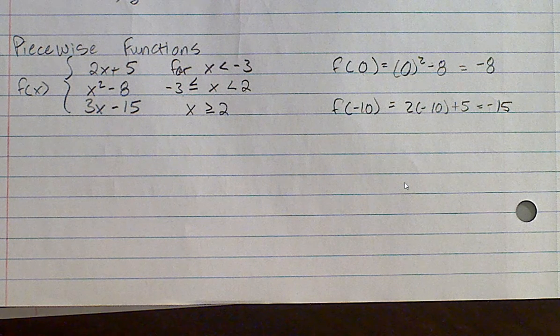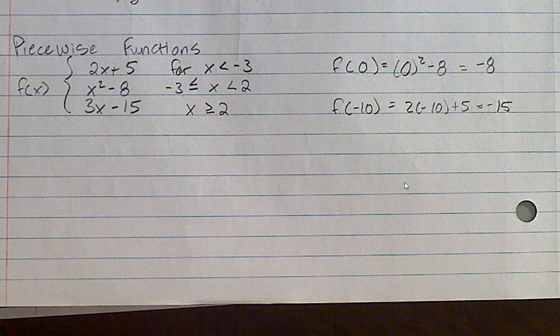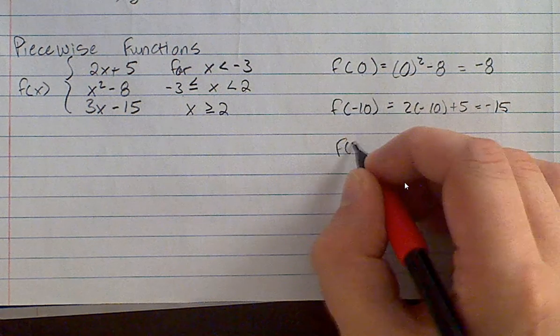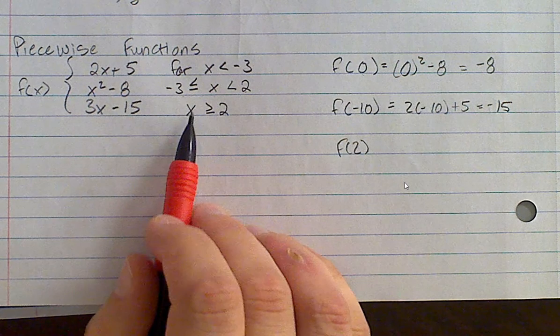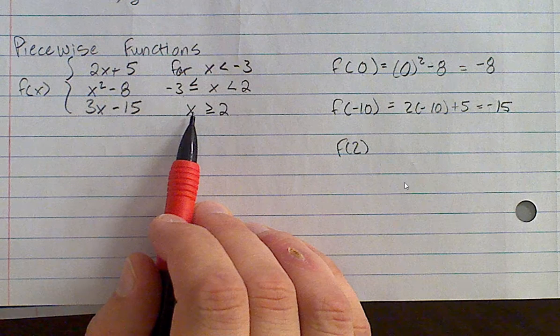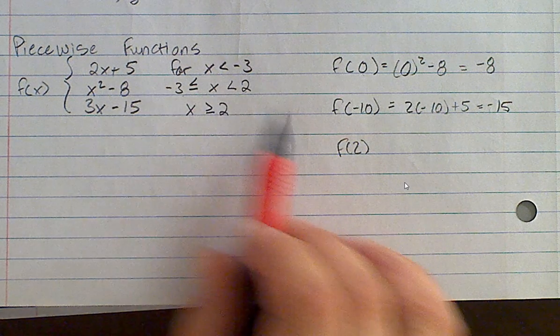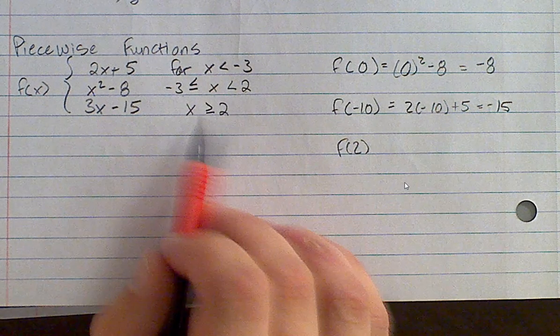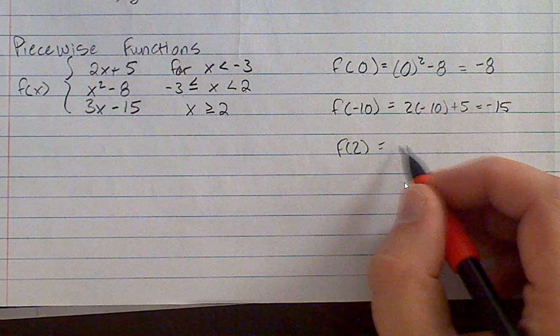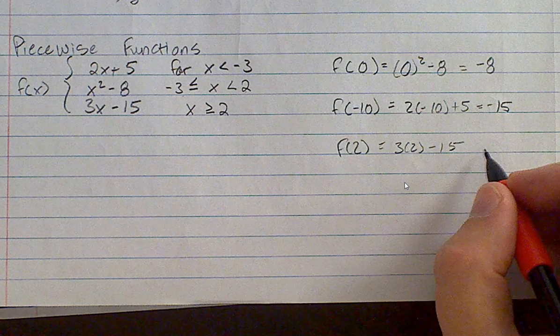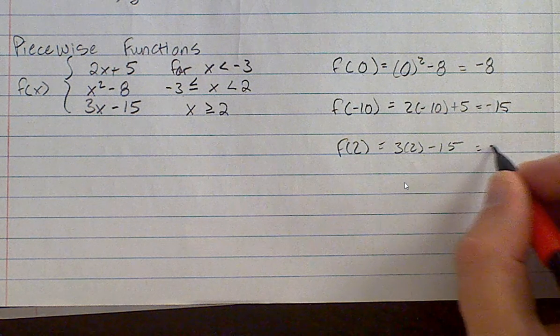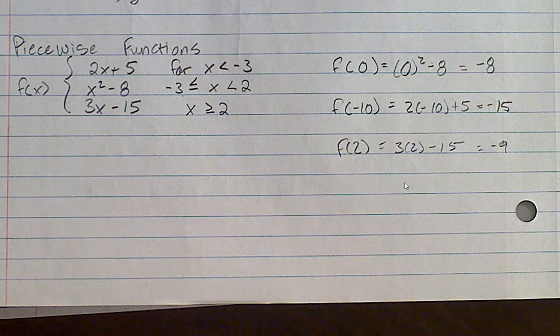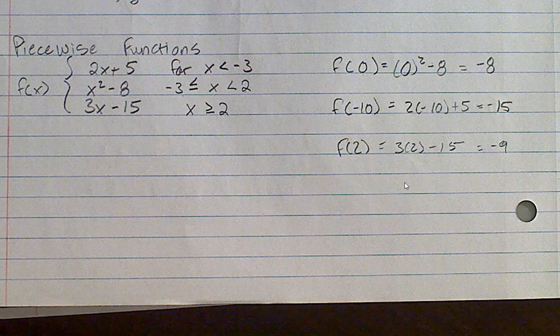The only place that you could have an issue is making sure you understand the way that those intervals work. So if I wanted you to evaluate, say, f of 2. 2 of these intervals have 2 in them. Right. So that's why I have them set up the way that I do. This is x less than 2. This is x greater than or equal to 2. So x equal to 2, it's only going to be the third function, which would be 3 times 2 minus 15. So 6 minus 15, which is negative 9. So that's evaluating a piecewise function.